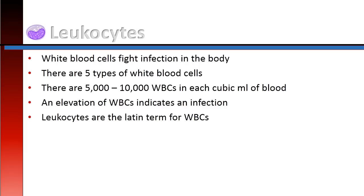White blood cells, or leukocytes, fight infections in the body. There are five different types of white blood cells. In each cubic milliliter of blood, there are approximately 5,000 to 10,000 white blood cells. An elevation of white blood cells can indicate an infection somewhere in the body. Leukocyte is the Latin term for white blood cells.